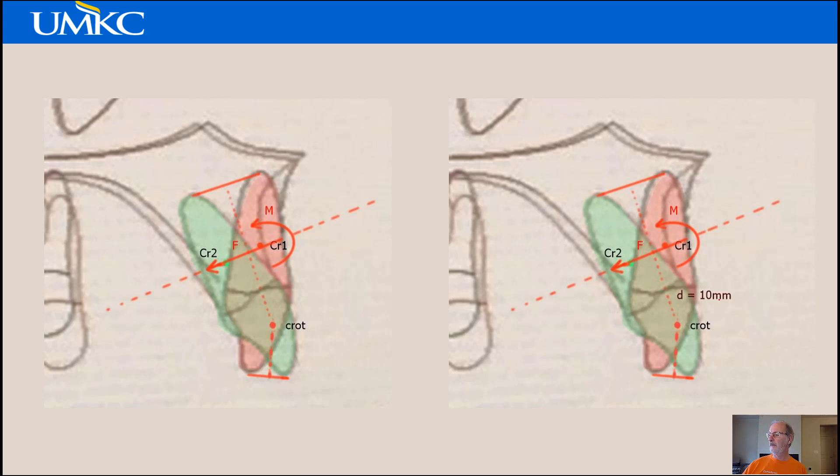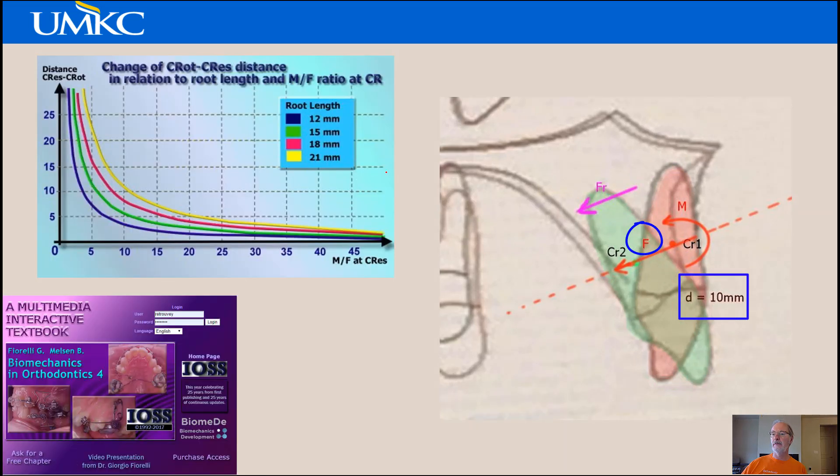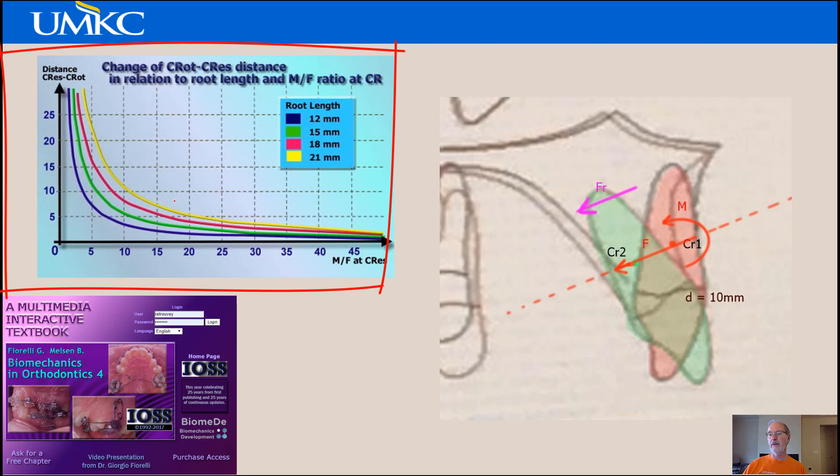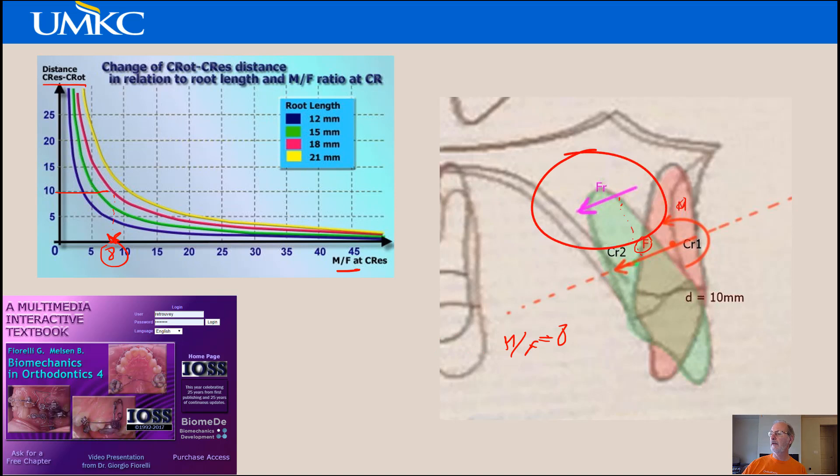In this case, we determined that the distance from center of rotation to the line of force or the line that goes through CR1 and CR2 is 10 millimeters. We use a table that was first developed by Dr. Burstone and then kind of simplified by Dr. Fiorelli and Melson. If we see that this distance from center of rotation to the center of resistance is about 10 millimeters and the tooth is roughly 17 or 18 millimeters, we have a corresponding value of the moment-to-force ratio of 8. What we know now is the moment-to-force ratio between F and this moment is equal to 8. Or if you could apply a force right here at 8 millimeters away from the line of action of the force at CR1, you would get to CR2.